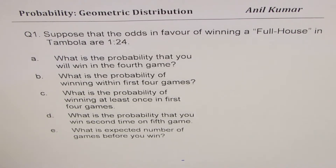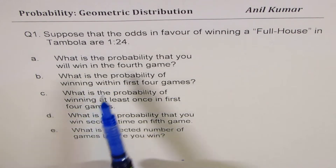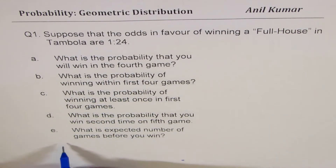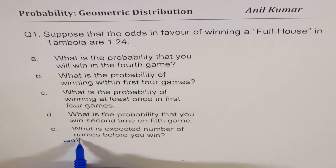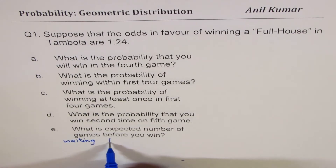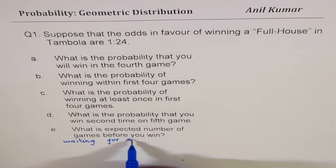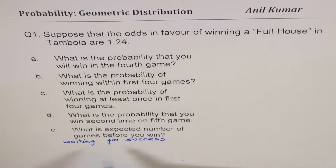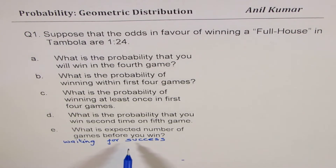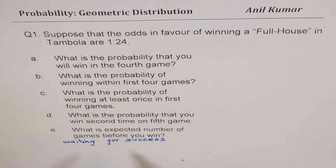Why is this a geometric distribution? If you look into all these questions, we are only talking about one thing: waiting for success. If you see a question in which success happens after a lot of failures, then that kind of experiment results in discrete probability dealing with geometric distribution.